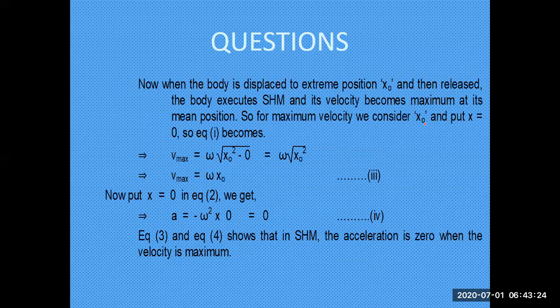Now when the body is displaced to an extreme position, the body starts executing simple harmonic motion. Its velocity becomes maximum when at the mean position. So the maximum velocity is considered at x-naught, and we put x equal to 0, because at the mean position this x is basically zero.